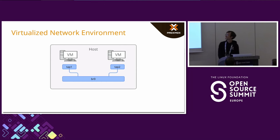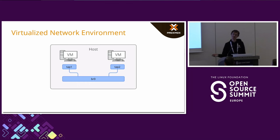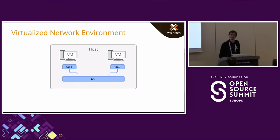Here is our virtualized network environment. Usually in a hypervisor you have VMs, each with a tap interface, connected to a bridge. This is a simple example with two VMs, each with a tap interface, both connected to the same bridge, bridge zero. There are different ways traffic can flow, and I want to talk about how we can use NF Tables to write firewall rules for the different traffic flows inside the hypervisor.